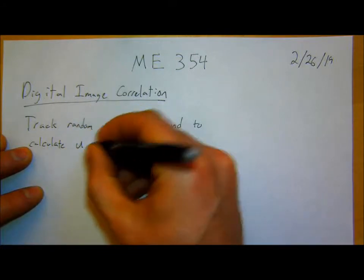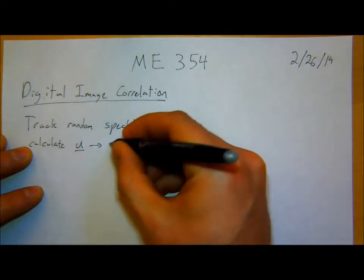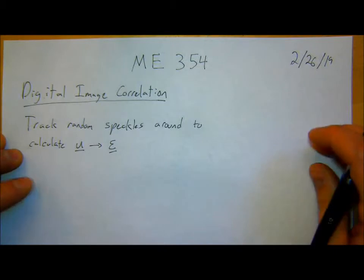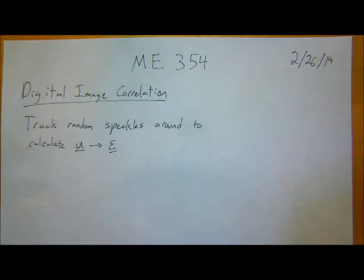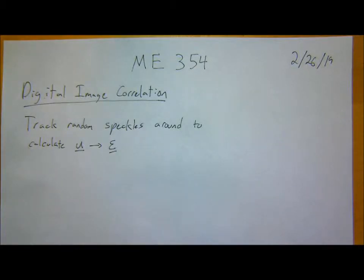So, what does that mean? What does that look like? What do I mean when I say a random speckle pattern? I'll show you in a little bit. First, I want to show some actual examples of digital image correlation.